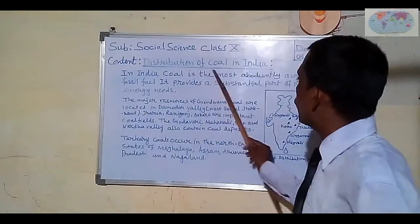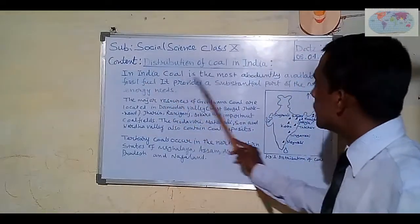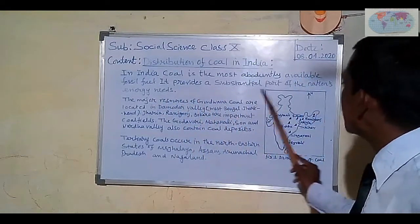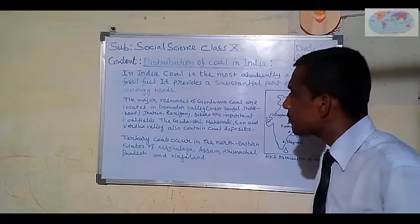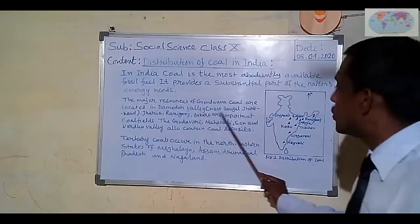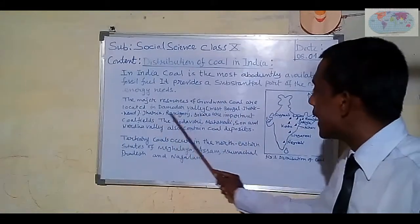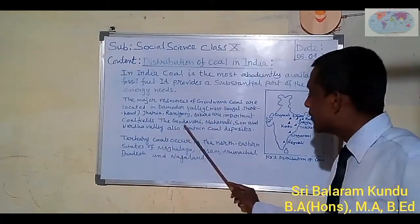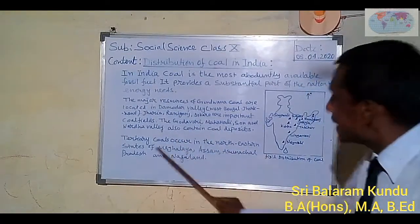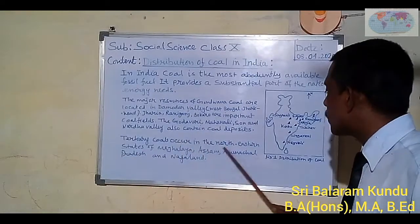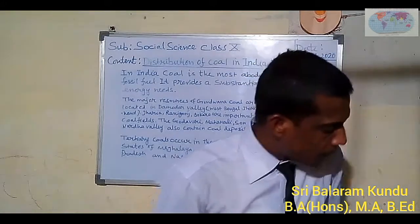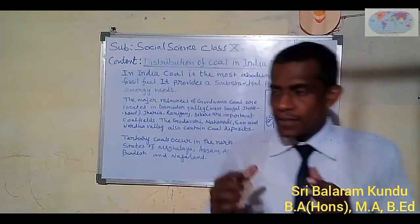In India, coal is the most abundantly available fossil fuel and provides a substantial part of the nation's energy needs. The major resources of Gondwana coal are located in the Damodar Valley, West Bengal, and Jharkhand — with Jharia, Raniganj, and Bokaro being important coal fields. The Godavari, Mahanadi, Son, and Wardha valleys also contain coal deposits. Tertiary coals occur in the north-eastern states of Meghalaya, Assam, Arunachal Pradesh, and Nagaland.